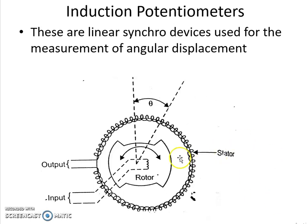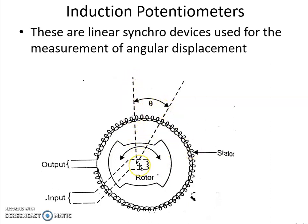An induction potentiometer consists of a rotor attached to the transmitting shaft, on which the primary winding is wound, and its stator is wound with a secondary winding. These two windings are so designed that the output voltage across the secondary stator winding is directly proportional to the angular position of the rotor. As the angular position of the rotor theta increases with respect to its reference position, the output voltage generated across the stator winding also increases.